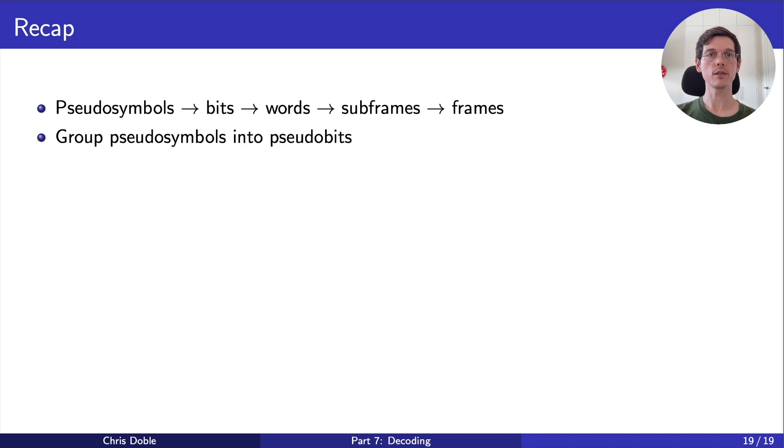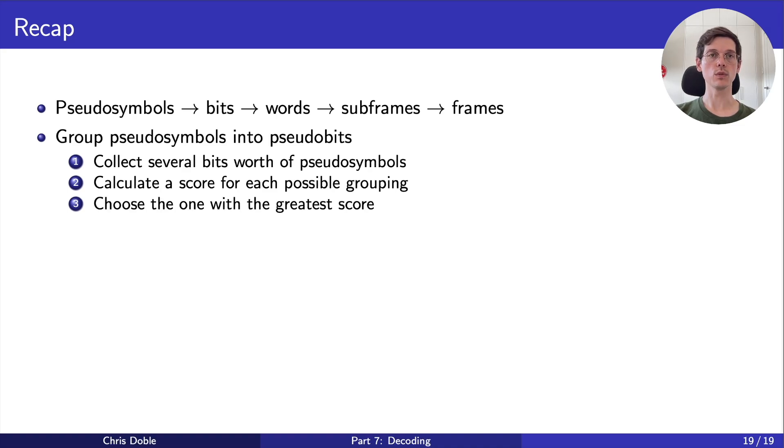Second, we determine how pseudosymbols should be grouped into pseudobits, by collecting several bits worth of pseudosymbols, calculating a score for each possible grouping, and picking the one with the greatest score.